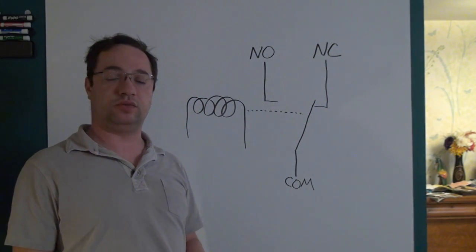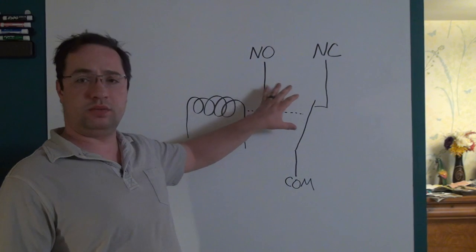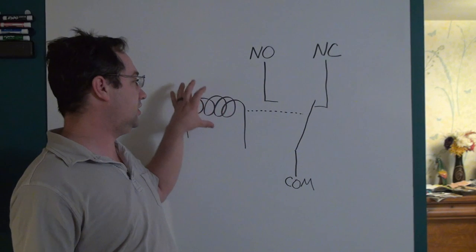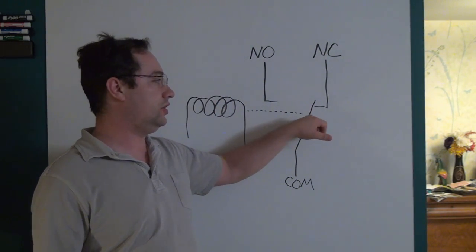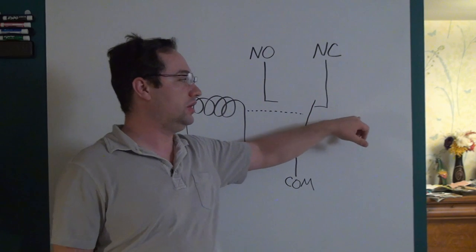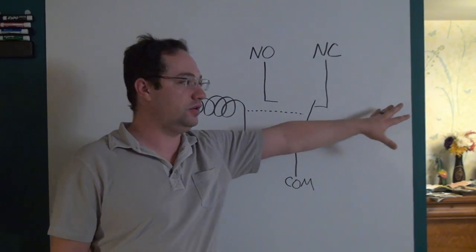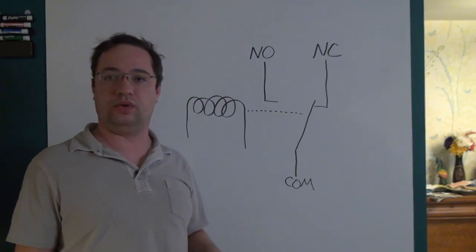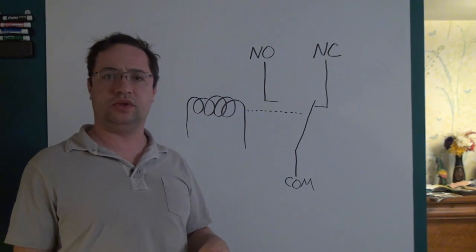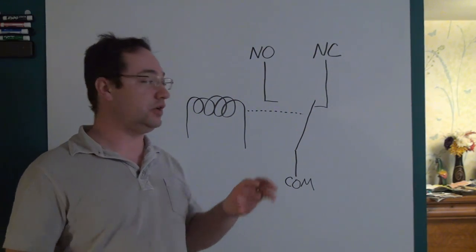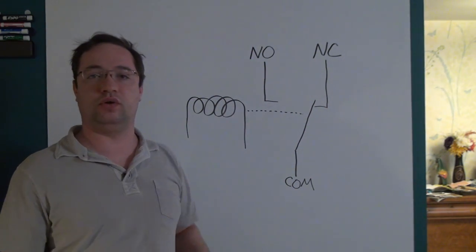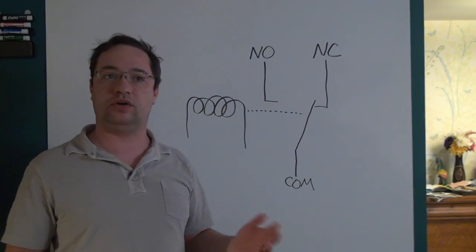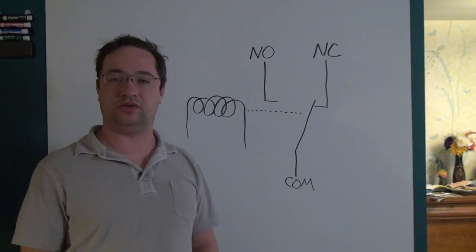You can have multiple poles ganged up together in a single relay, so you can have a double pole double throw, a triple pole, or a quadruple pole double throw. The dashed line represents that the coil affects both arms simultaneously. Relays can get quite large in terms of their poles, allowing you to switch multiple devices at the same time that aren't necessarily electrically related to each other.